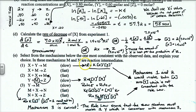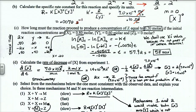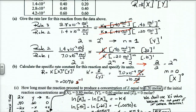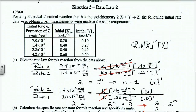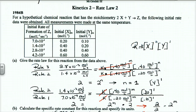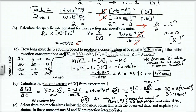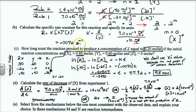Let's start by going over the questions we left off with. We were going over 1984b, and from our experimental data, we came up with the orders: x to the 0, y to the 1. We calculated the rate constant with the correct units. Molarities cancel, and we had s to the negative 1.